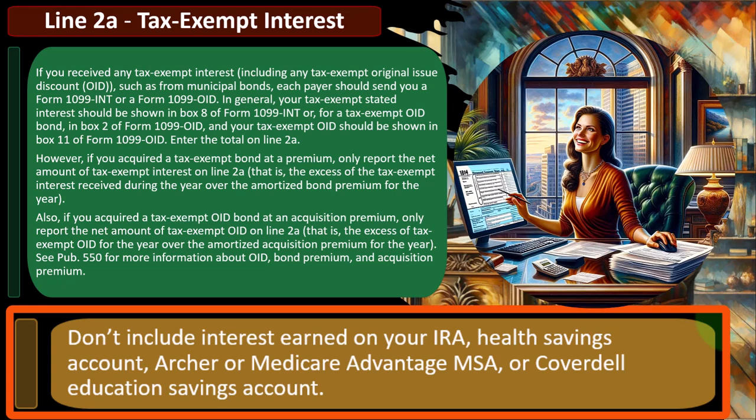Usually it's pretty straightforward because you have the forms and the data input software — if you're using software, which I highly recommend — will help you populate those forms properly. Do not include interest earned on your IRA, Health Savings Account, Archer or Medicare Advantage MSA, or Coverdell Education Savings Account. If you just make the returns by the forms that you get, you're going to notice you didn't get a 1099 interest or dividend form for accounts that are under umbrellas for a retirement account such as an IRA.